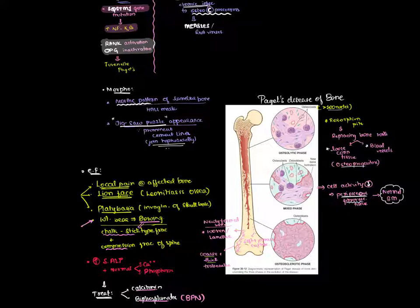Coarse and thick trabeculae are formed. There is also formation of a cortex which is soft and porous. Clinical features of Paget's disease include local pain in the affected bone.